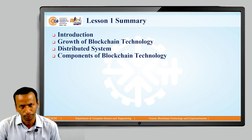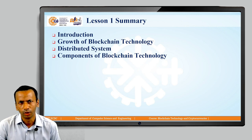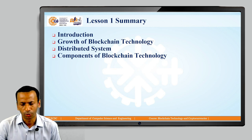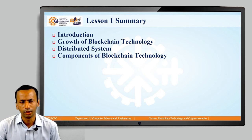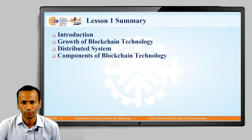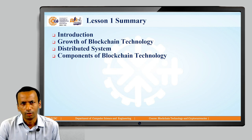We discussed the core concept of the distributed system, the different components of the distributed system, what is a node, what are the links, how distributed nodes communicate with each other, and how they work together to achieve a common goal. We also discussed the components of blockchain technology and a primary introduction of Bitcoin — one of the first applications developed using blockchain technology.